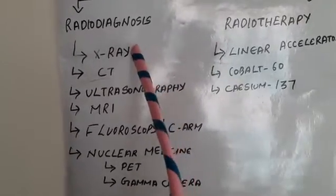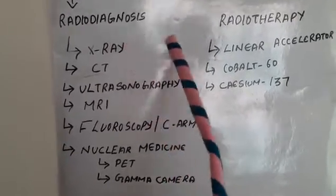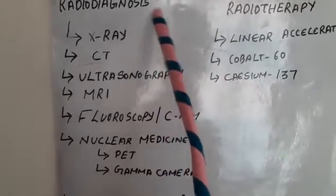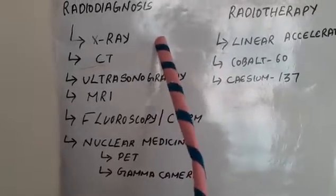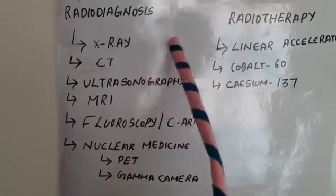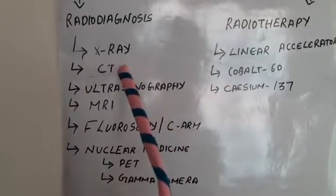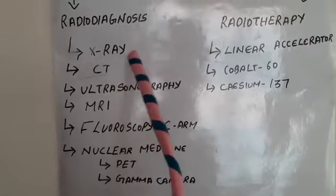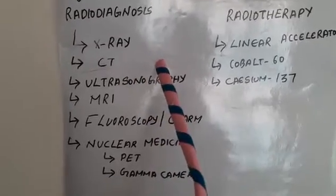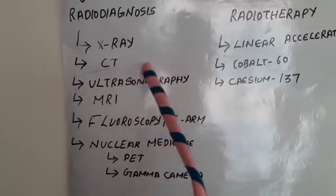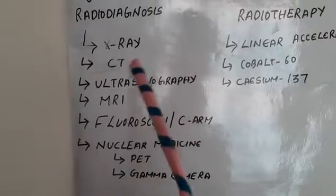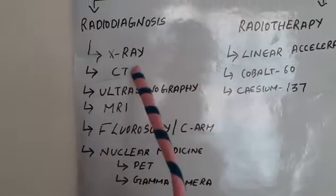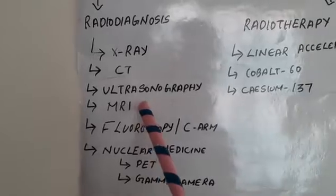In X-ray we use different views: AP view, PA view, lateral view, and oblique views. In CT we take different slices: axial, sagittal, and coronal slices. The same slicing method is used in MRI; the difference is that CT uses X-rays whereas MRI uses magnetic properties.